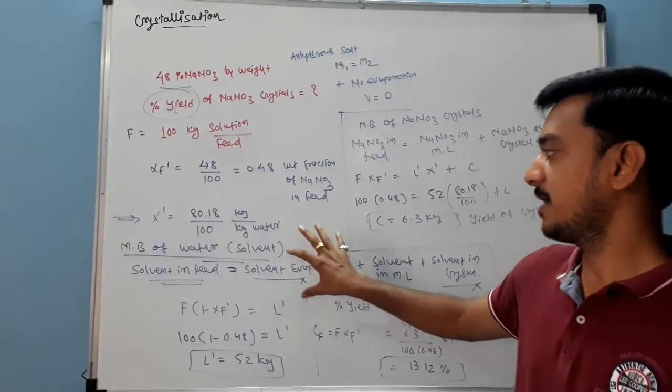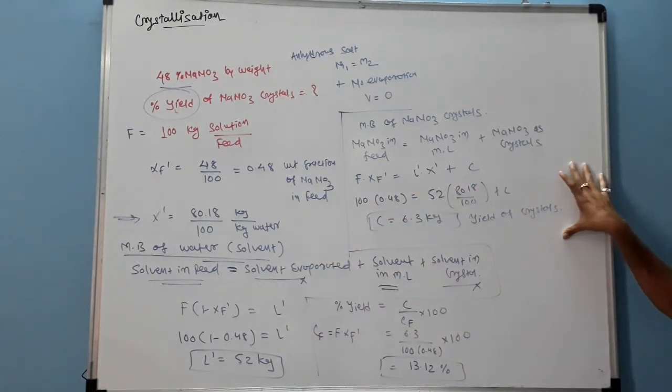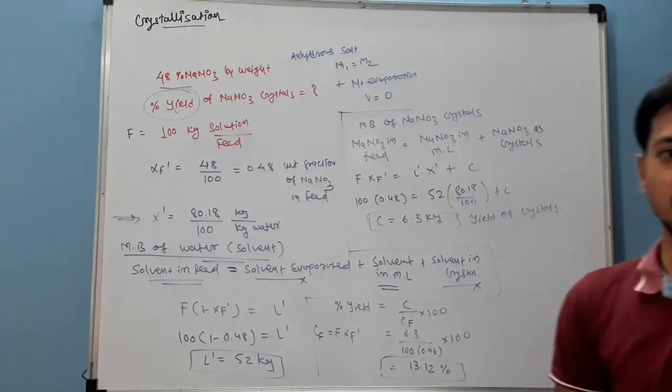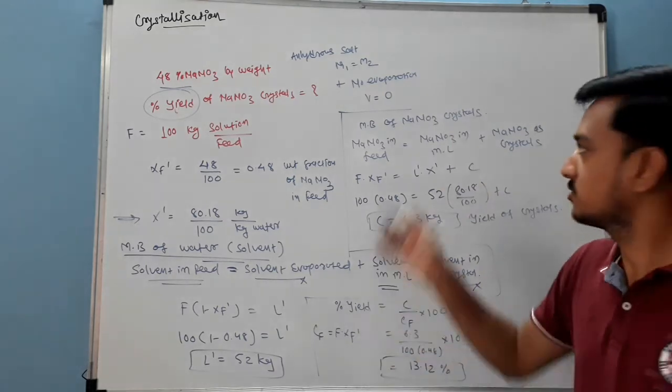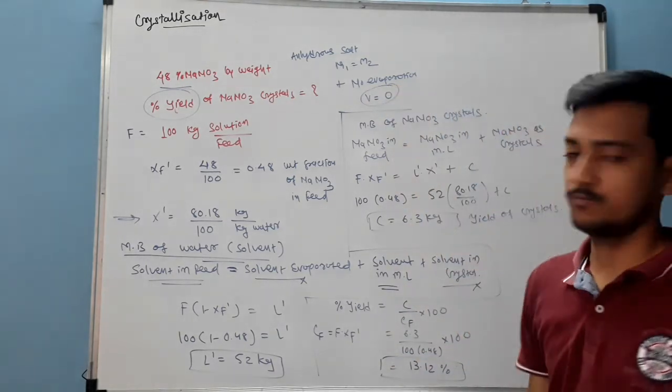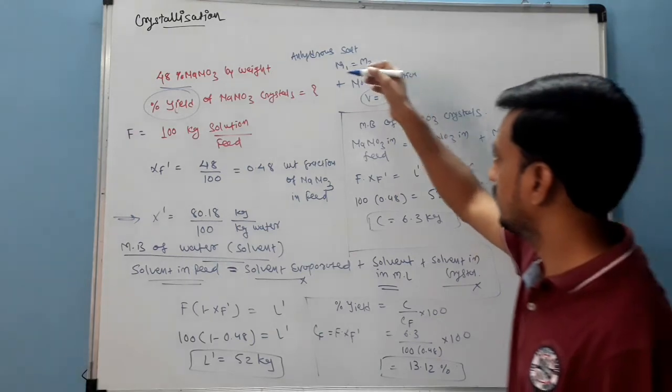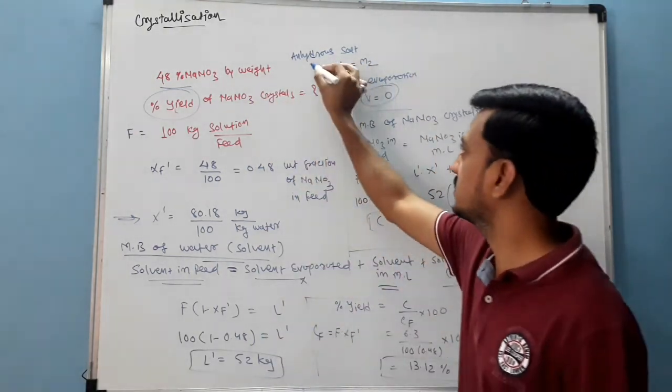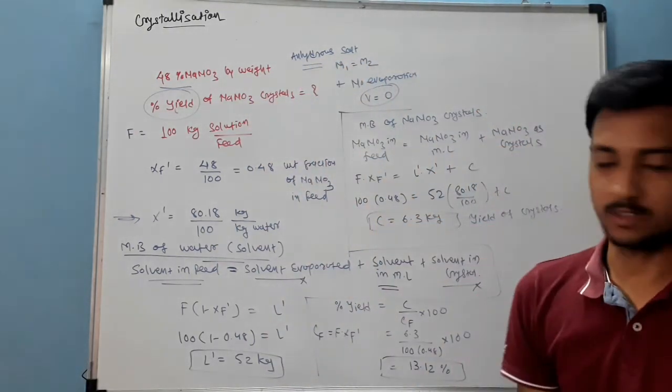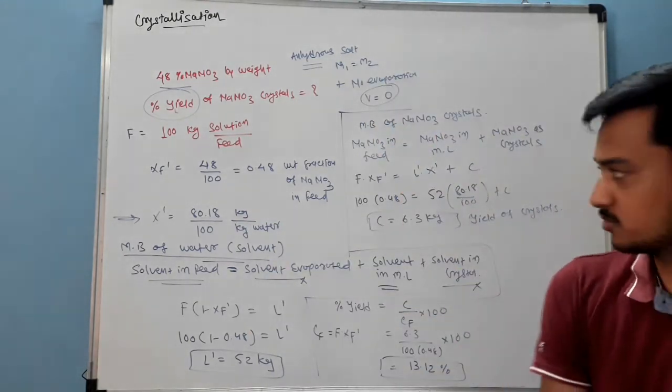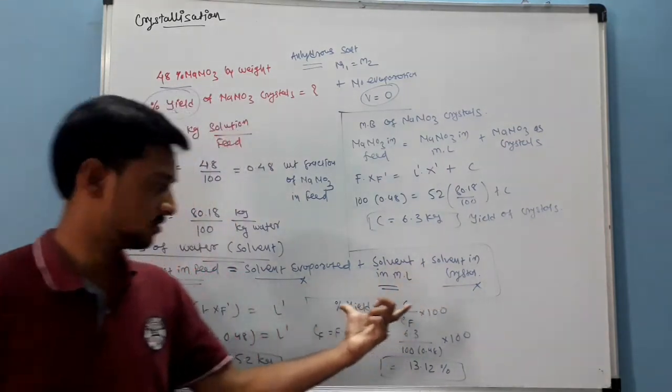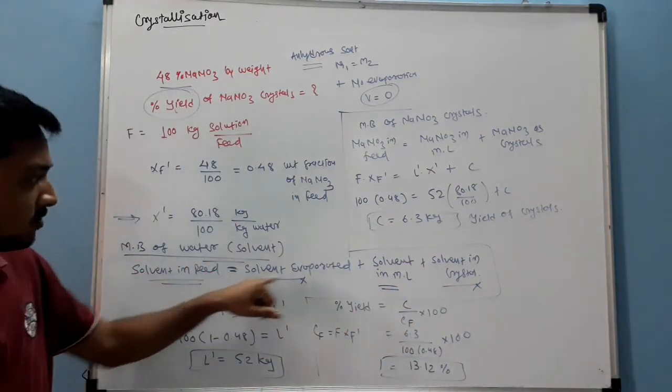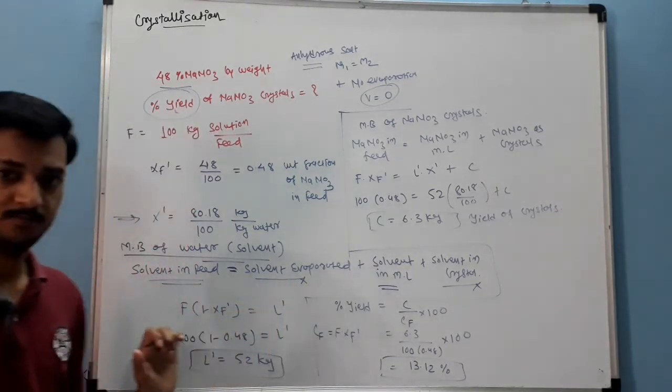Very simple example is there. Just you have to do material balance of solvent and material balance of crystal solid. Here solute is NaNO3. There is no data given for water evaporated, so V is equal to 0. It is anhydrous salt, so M1 becomes M2. Here first term and third term will be neglected, so solvent in feed is equal to solvent in mother liquor.